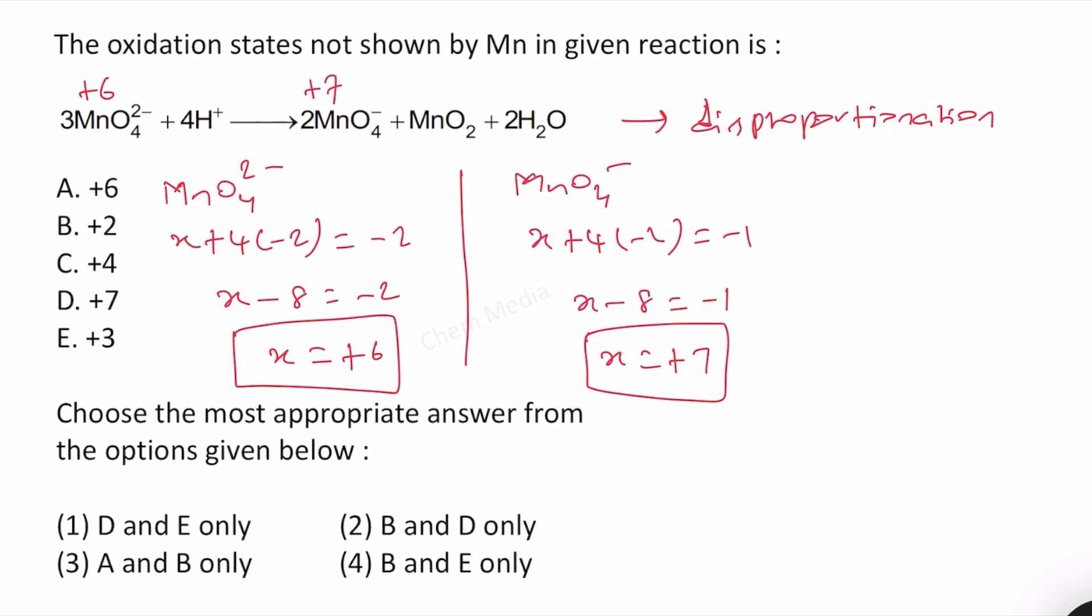In MnO2, it will be x + 2(-2) = 0, and therefore x - 4 = 0, and therefore x equal to +4. Decrease in oxidation number, and therefore that is reduction.